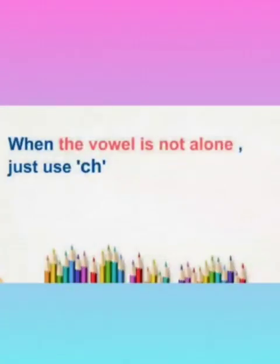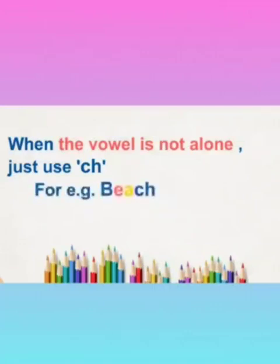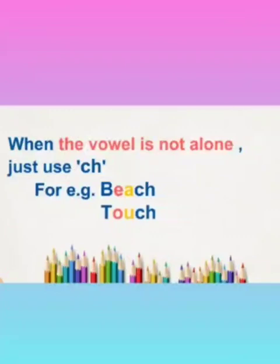And when the vowel is not alone — meaning there is a letter friend with the vowel — then we use ch. For example, beach. Now here the vowel is e and after e there is a vowel friend a, so we write ch with it. Next the word is touch. Again you can see the vowel o and there is a letter friend u with it, and o is not alone, so we write ch with it.